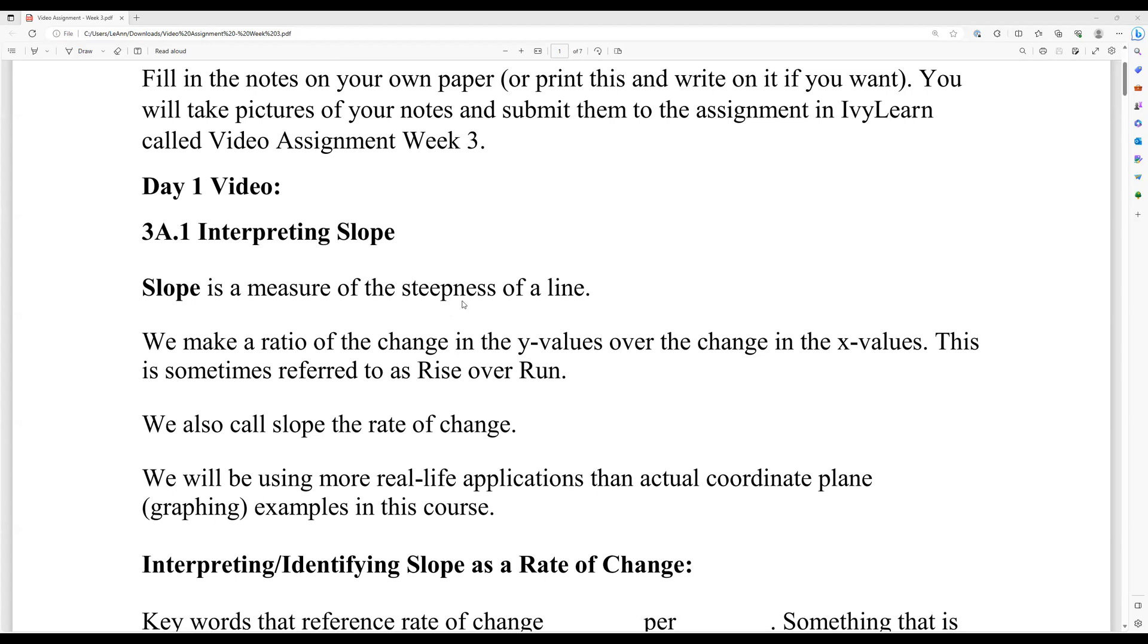Slope is a measure of the steepness of a line. We make a ratio of the change in the y values over the change in the x values. When we talk about that, we're talking about ordered pairs from algebra, x comma y, like if you plotted a point. Sometimes this is referred to as the rise over run.